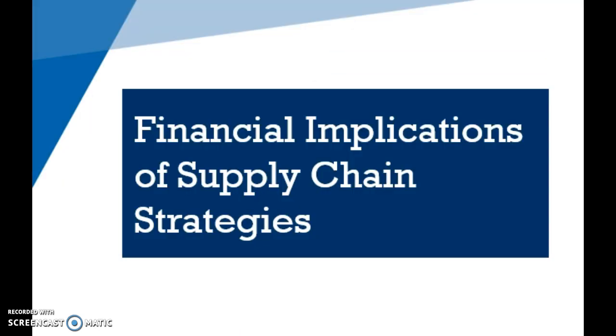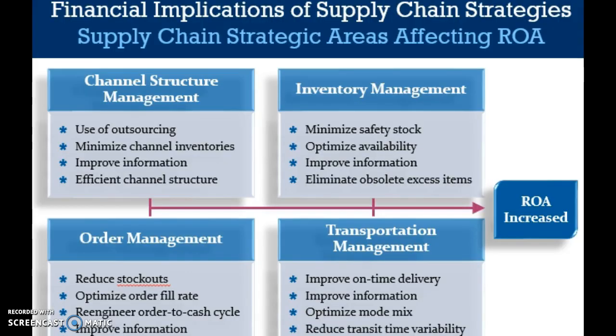Let's briefly consider the financial implications of supply chain strategies. Channel structure management includes decisions regarding the use of outsourcing, channel inventories, information systems, and channel structure. By outsourcing supply chain activities, the organization might realize lower supply chain costs, a reduction in assets, and increased revenue. Decisions that lower supply chain assets and/or improve revenue through supply chain service improvements result in a higher ROA, or return on assets.